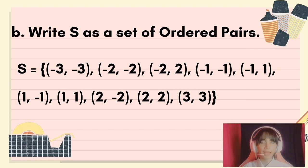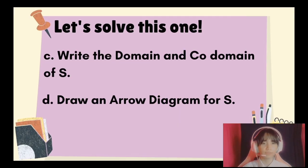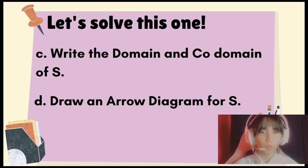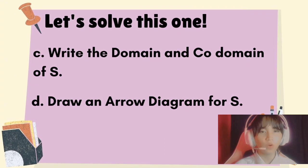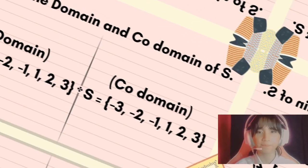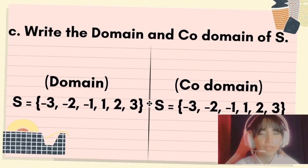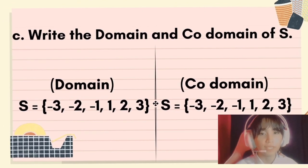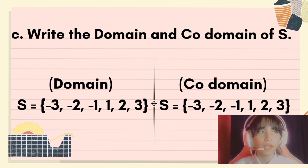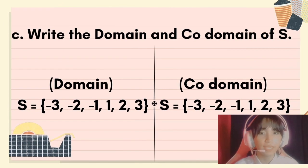For the last 2 questions, write the domain and codomain of S, and draw an arrow diagram for set S. So, the domain and codomain will also be what the set C and set D contains as an element.